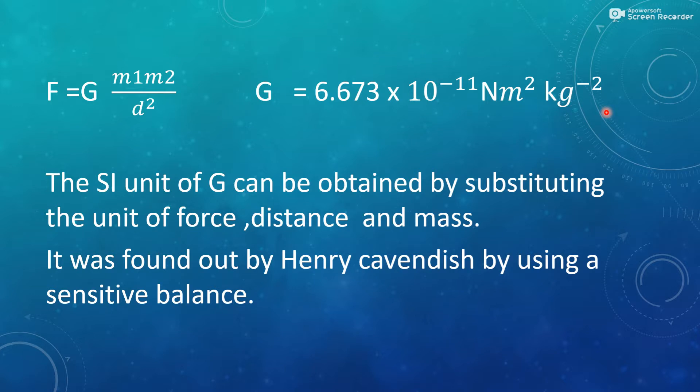So the SI unit of G can be obtained by substituting the unit of force, distance and mass. And it was found out by Henry Cavendish by using a sensitive balance.